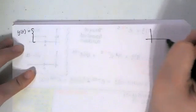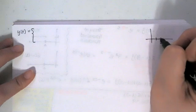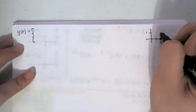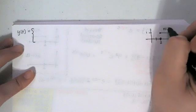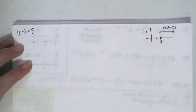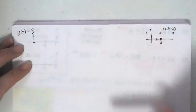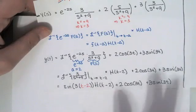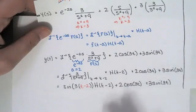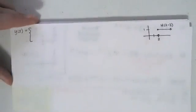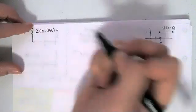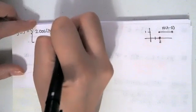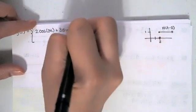On the interval from zero to two, the Heaviside function H(t−2) equals zero. So we have zero times the sine term, plus the remaining terms. That gives us 2·cos(3t) + 3·sin(3t) on the interval from zero to two.